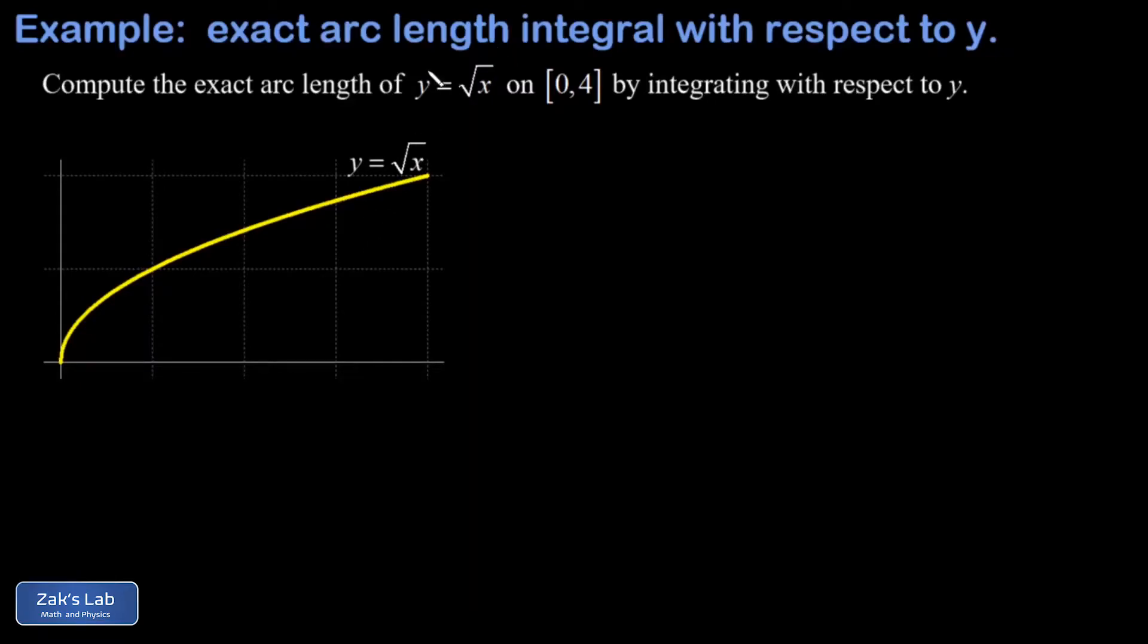In this problem, we're computing the arc length of this curve y equals square root x on the interval 0 to 4, and we're asked to do this by integrating with respect to y. Before I write down the arc length formula, I just wanted to note here that at the end of this interval that's x equals 4, that corresponds to y equals 2. So when we integrate with respect to y, we're going to use the interval 0 to 2.